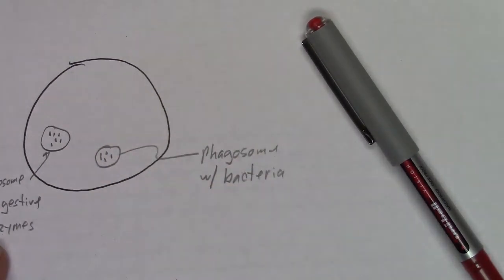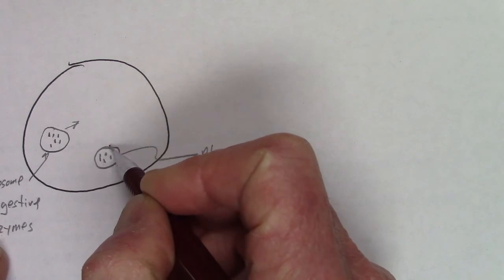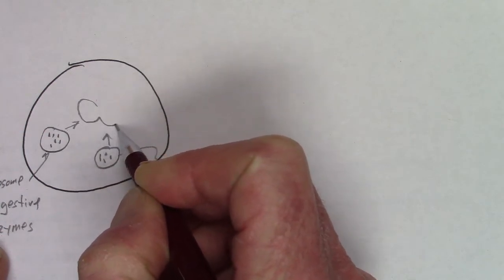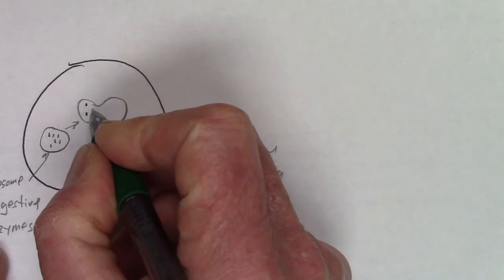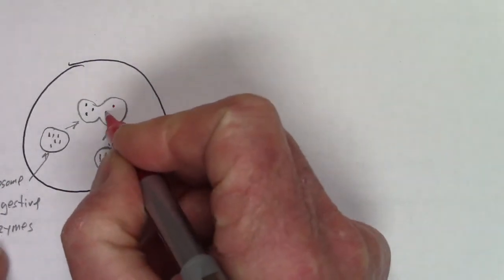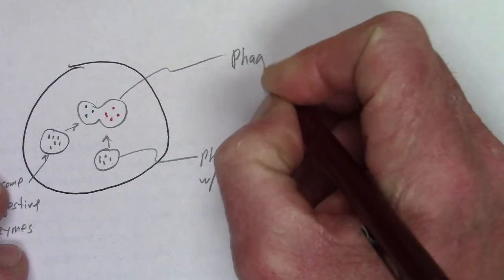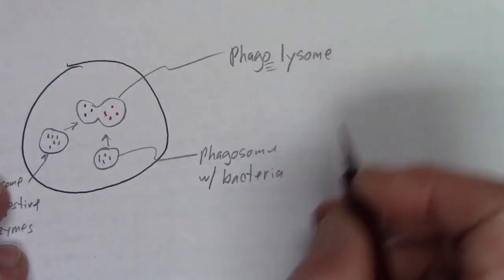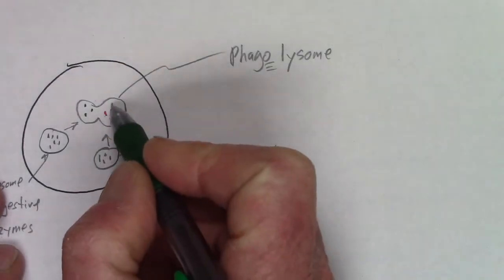The lysosome with digestive enzymes and the phagosome with bacteria simply fuse together. A little bit later in time, here is the lysosome and here is the phagosome — they merge together. So now we have the digestive enzymes and the bacteria together. Those two vesicles fused, and this is referred to as a phagolysosome — again there's that 'O' connector. What happens is the digestive enzymes move over and chop up and kill the bacteria.